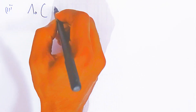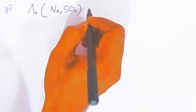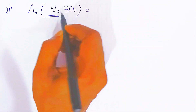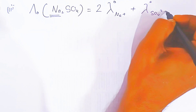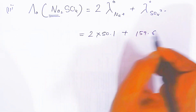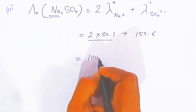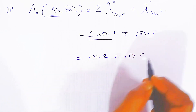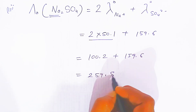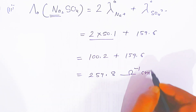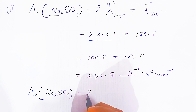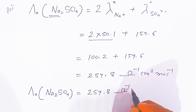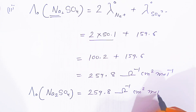Similarly, the molar conductivity at zero concentration of sodium sulfate Na₂SO₄ is nothing but twice of λ° of Na⁺ plus λ° of SO₄²⁻. Now just put the values: 2 into 50.1 plus 159.6. Twice of 50.1 gives 100.2, and adding 159.6 gives 259.8 ohm inverse centimeter square per mole.